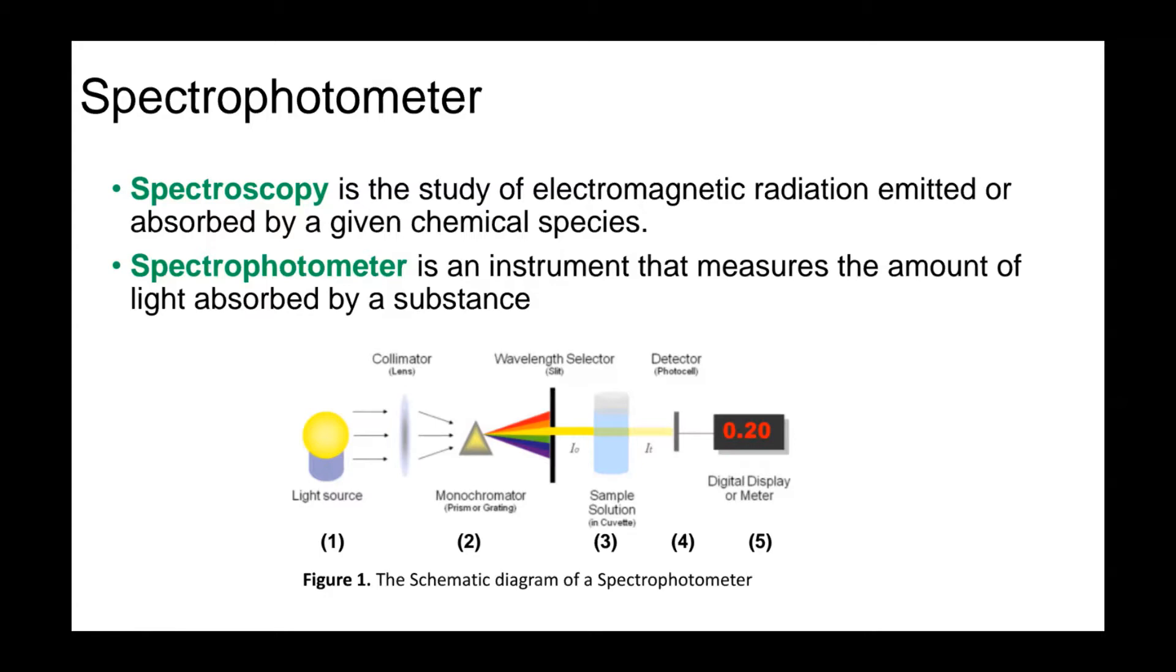A light source is capable of providing a range of wavelengths. A monochromator selects a particular wavelength of light and delivers this to the sample cell with an original intensity I₀. The sample cell contains the solution in a cuvette or test tube which is being analyzed. A detector measures the intensity of the transmitted light from the sample. And a digital display or meter displays the transmitted intensity.